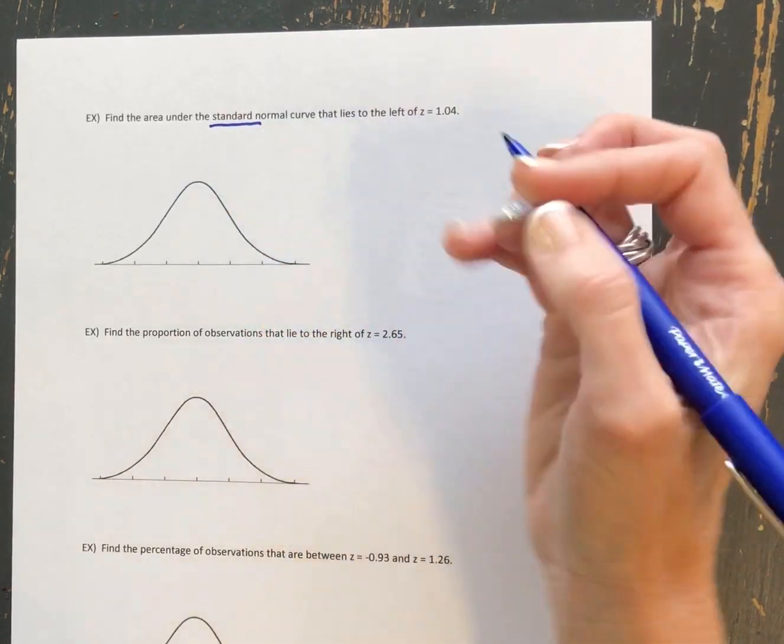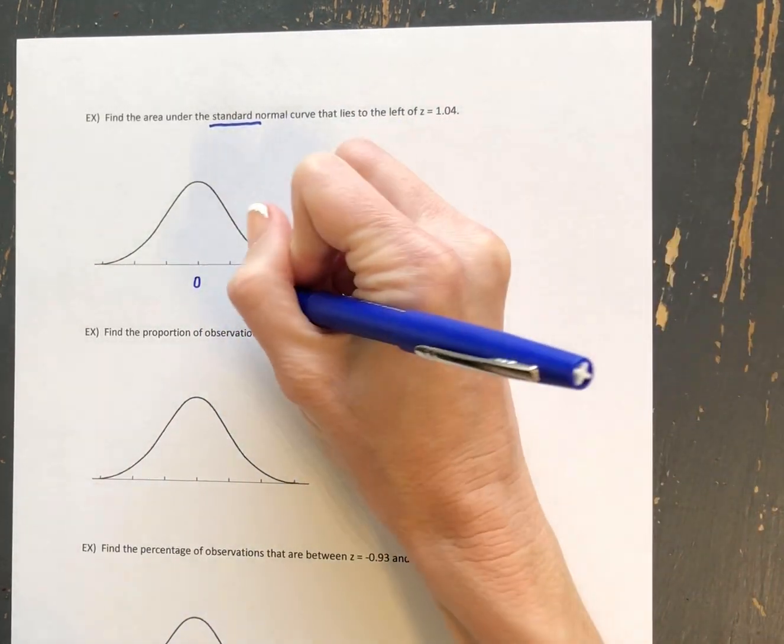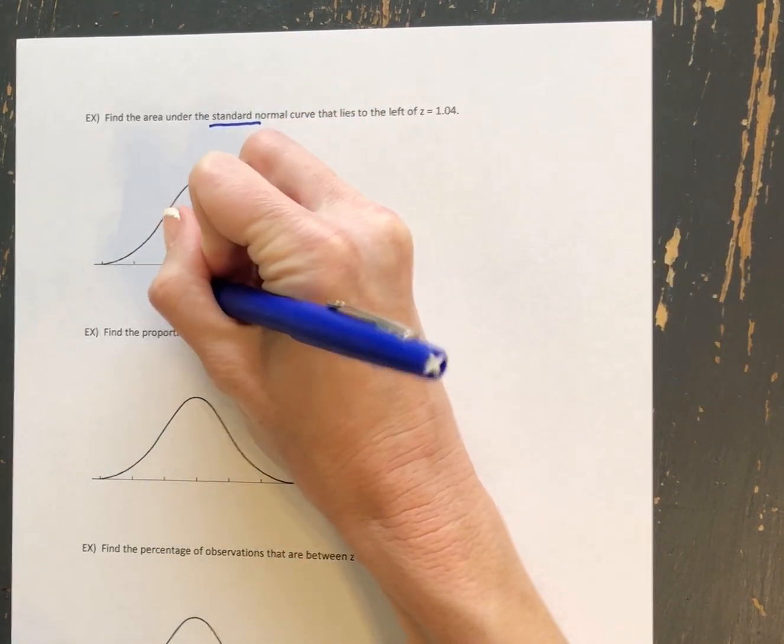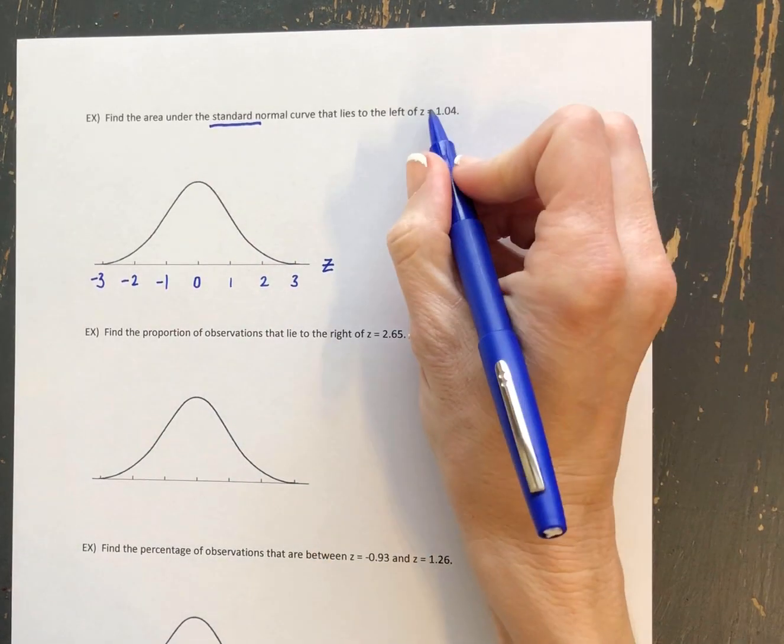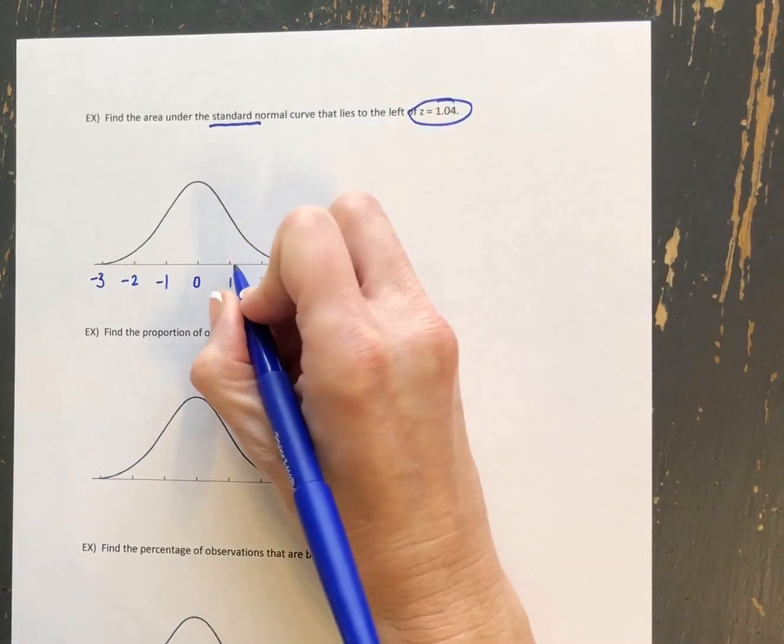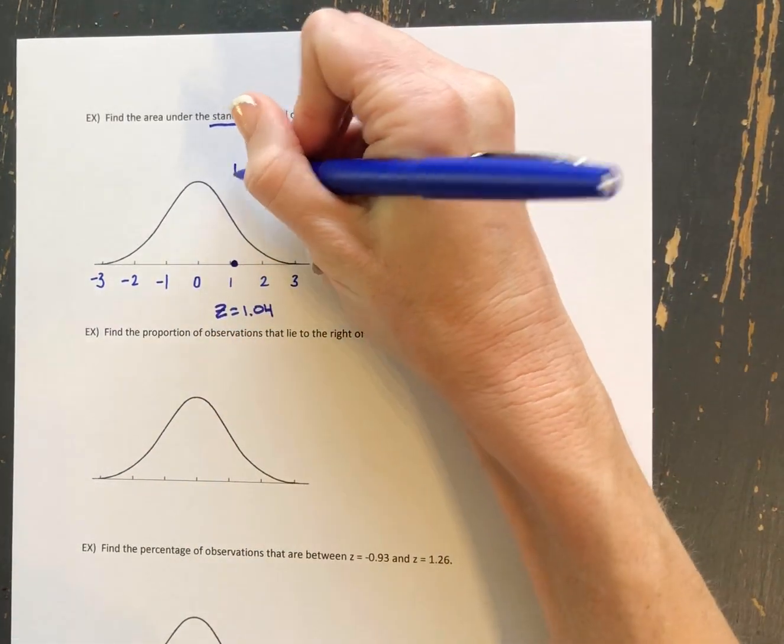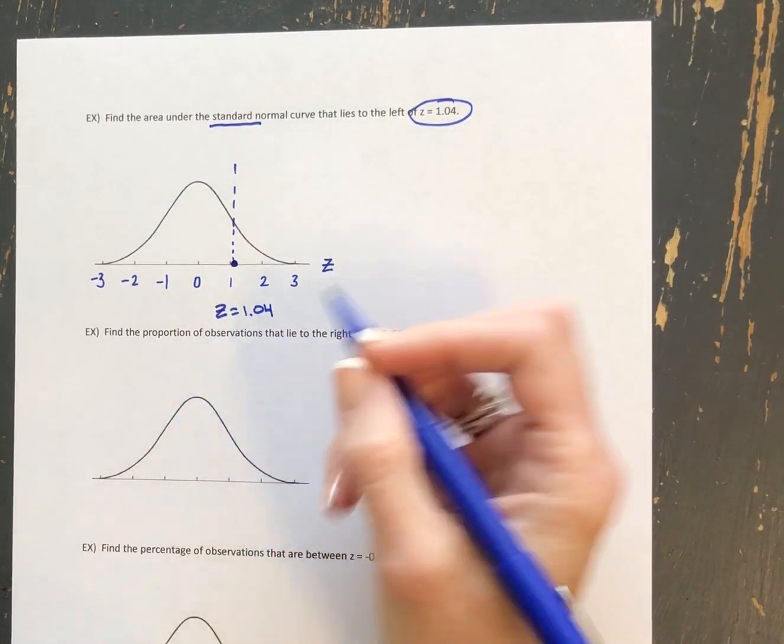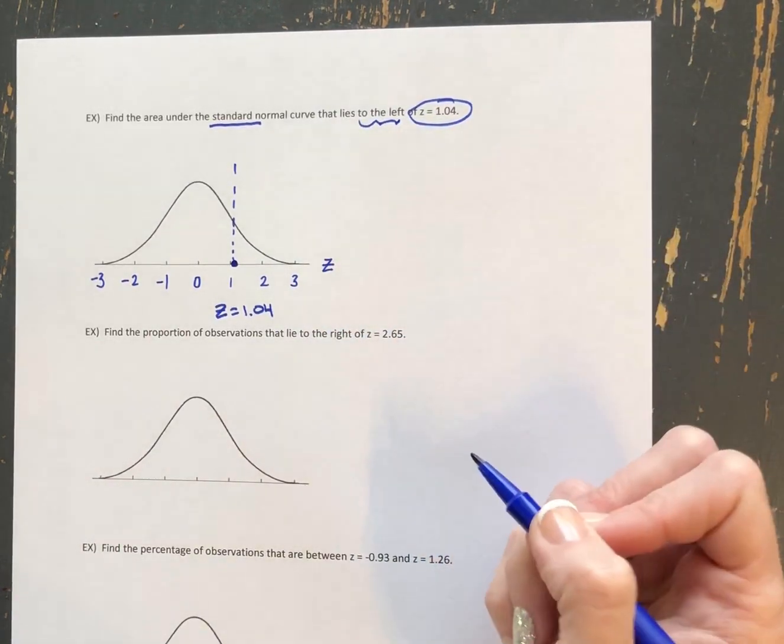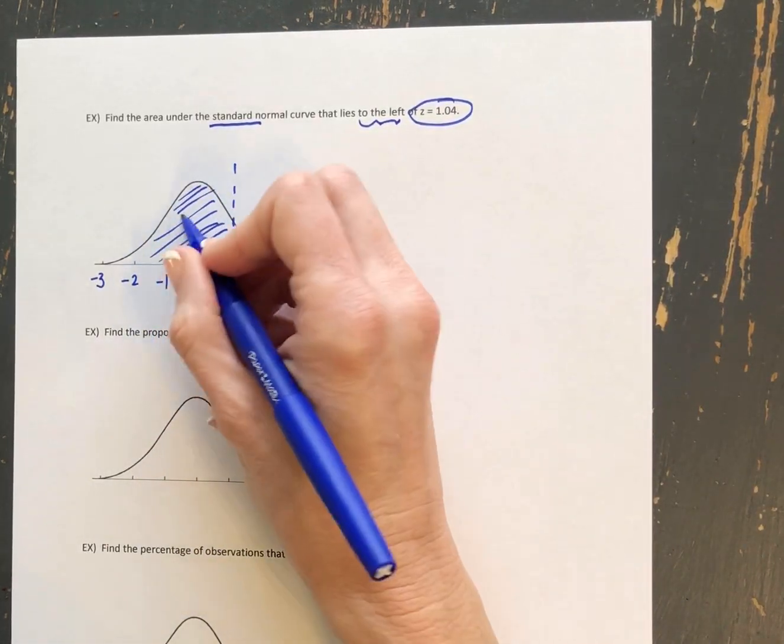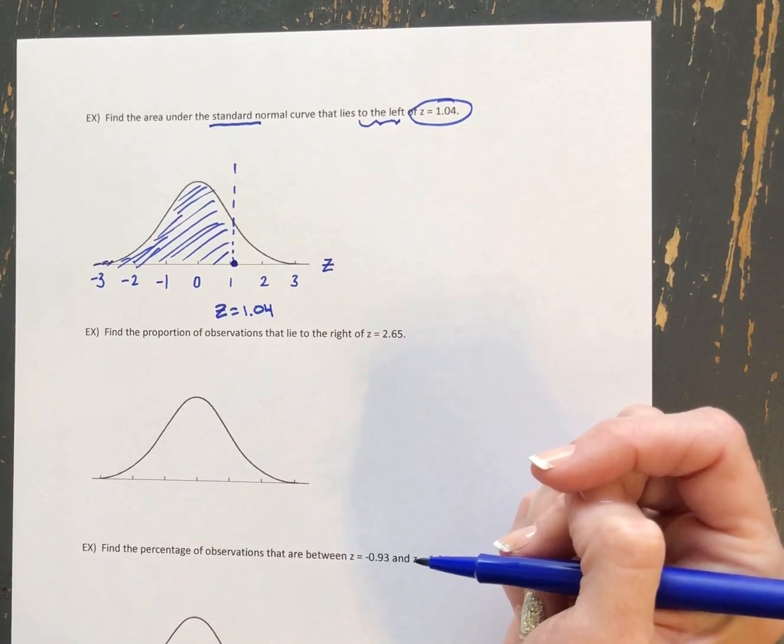Because it says the standard normal curve, we know that this is a z distribution. We know it's centered at 0 and has standard deviation 1. And so we can label out to three standard deviations above and three standard deviations below the mean. At this point, we're going to look at the z value they gave us, which was 1.04. So we're just barely above 1 here. That's the value that we are interested in. And specifically, regarding that value, we're looking for the area that lies to the left of that z-score. So that's all this area down here, continuing infinitely to the left. So that's what we're looking for is how to find that area.